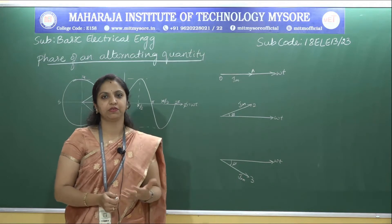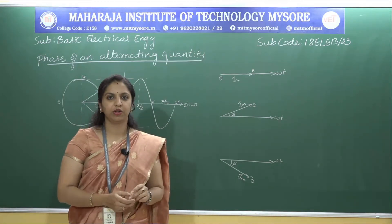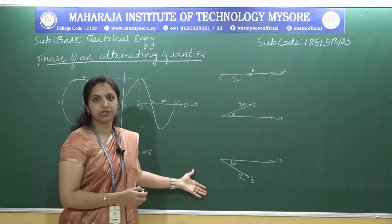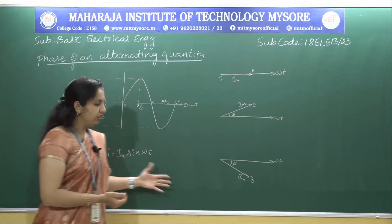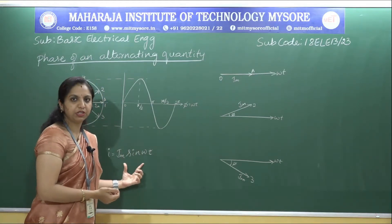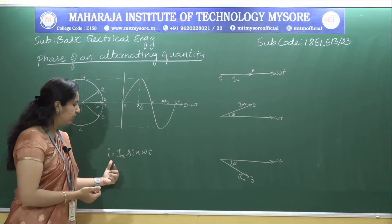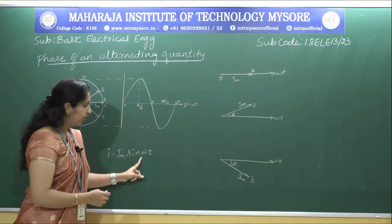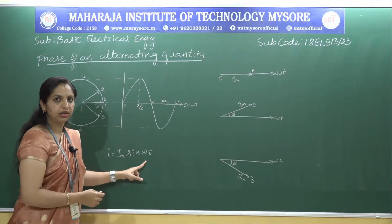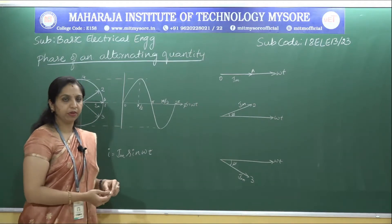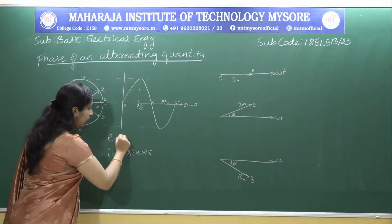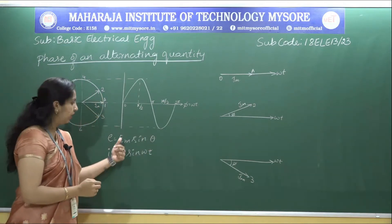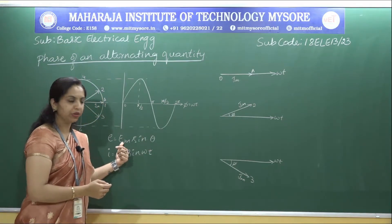I hope you are already familiar with the concept of generation of alternating quantity. Based on the generation of alternating quantity, we are going to represent the phase of an alternating quantity. We have already derived the expression: i = Im sin(ωt), or considering ωt as θ. In terms of EMF, that was e = Em sin(θ). This is the instantaneous EMF equation and this is the instantaneous current equation.